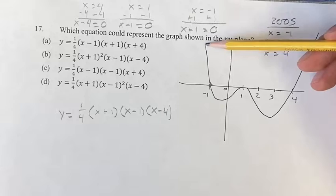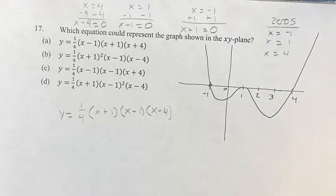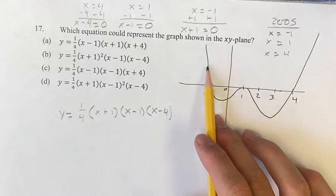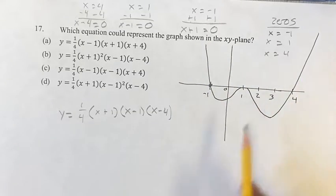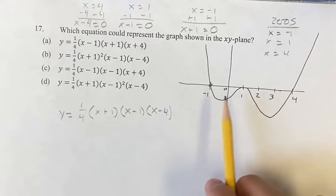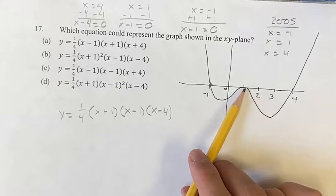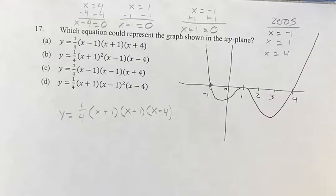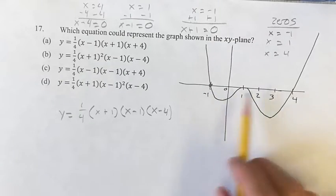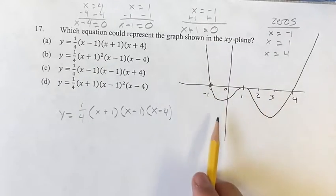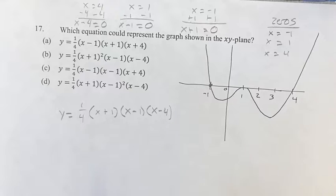Well, notice that there's two types of zeros in this function. At -1 and 4, the value of the function changes from positive to negative, or negative to positive. So it's crossing and then going through the axis. Versus at 1, it's negative, then it hits 0, and then it goes back to being negative again. If it's going through, then it's going to be an odd factor, and if it's just touching, it's going to be an even factor.